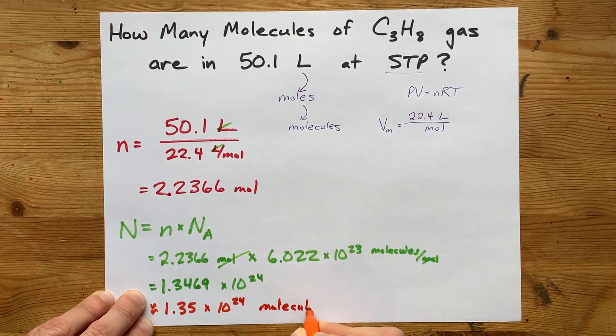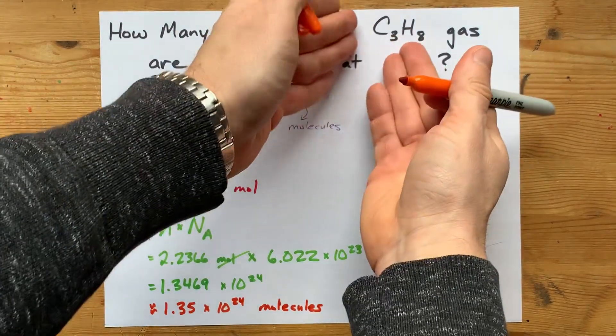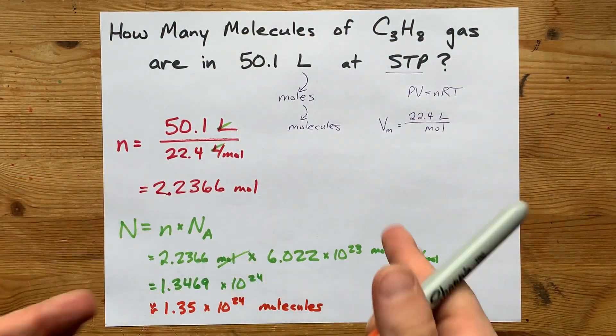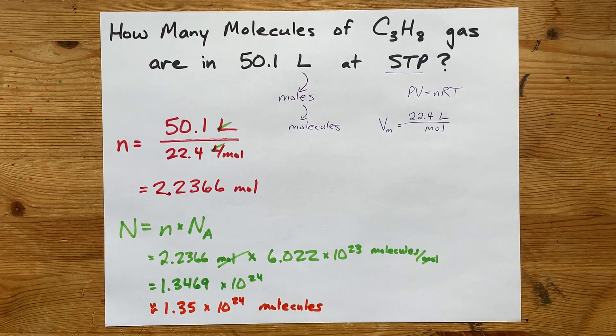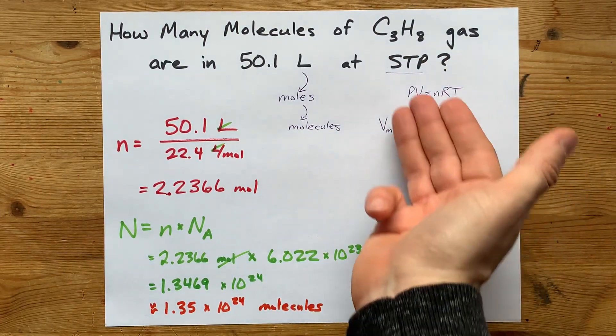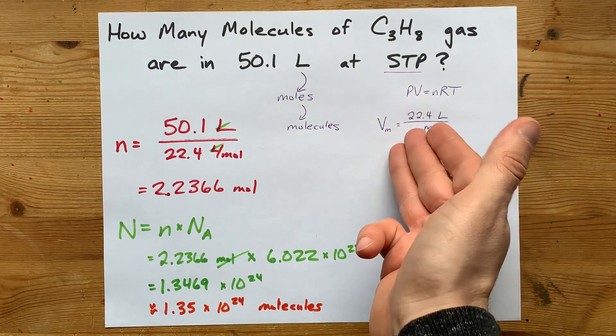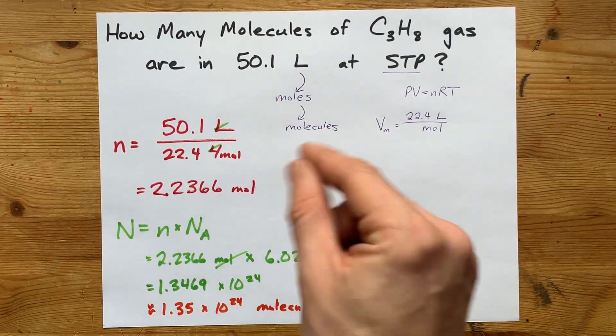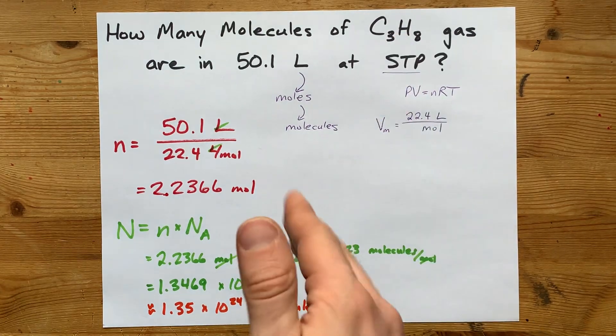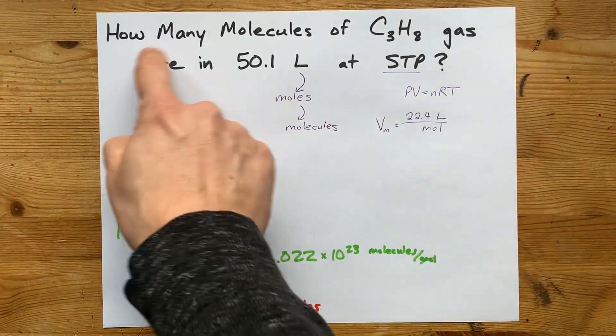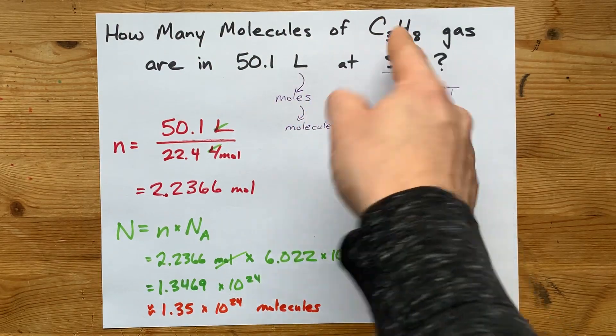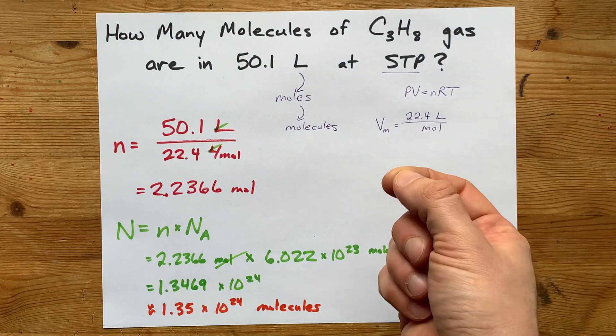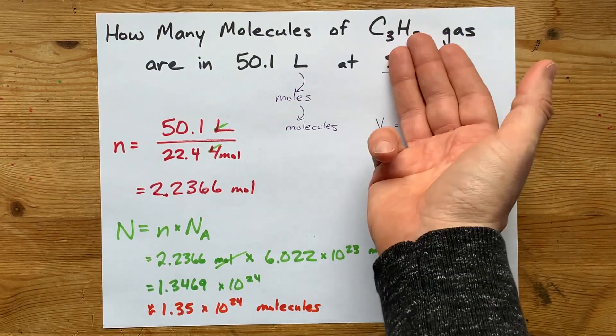Now, the last thing I want to point out here is that the fact that this was propane, C3H8, played no role here at all. The reason is we're assuming it's an ideal gas by using either PV equals NRT or this molar volume. And for an ideal gas, it doesn't matter what the identity of the gas particles are. If this had been how many molecules of nitrogen are in that many liters, it'd be the same answer. It doesn't matter what the gas is.